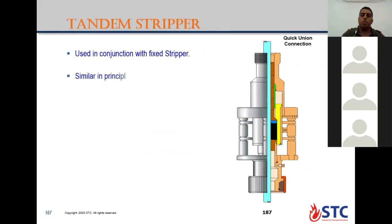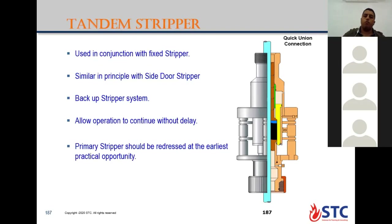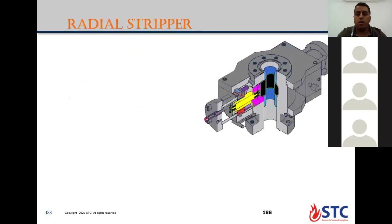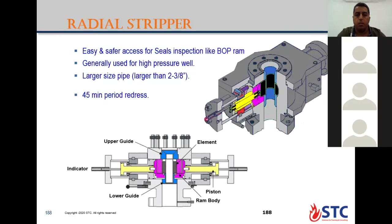The tandem stripper is the same as the side door with a connection from the top with the upper stripper, used as a backup stripper. If you have a leak in one stripper you need to stop, and to always maintain two strippers you need to repair or change the upper stripper assembly.